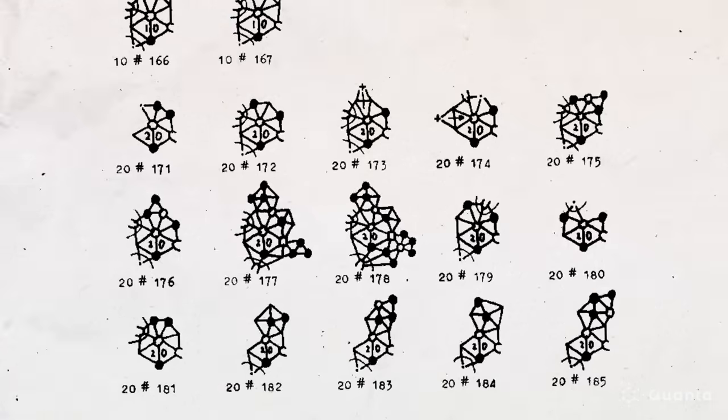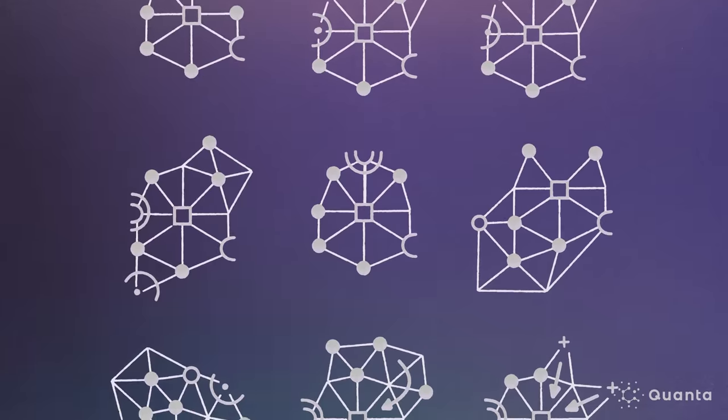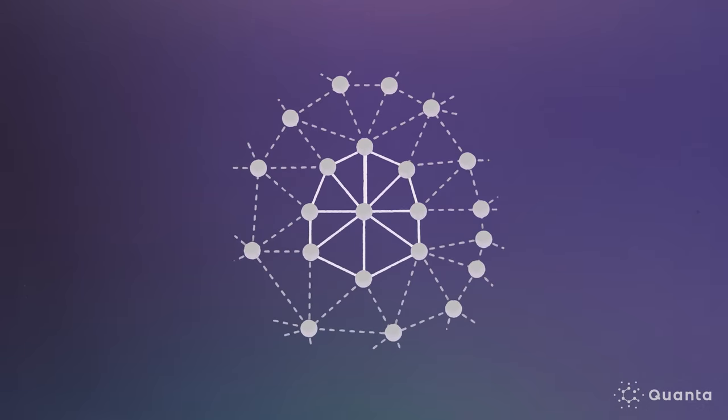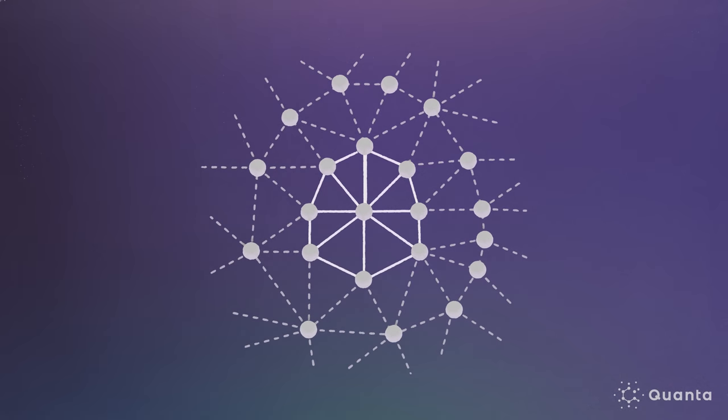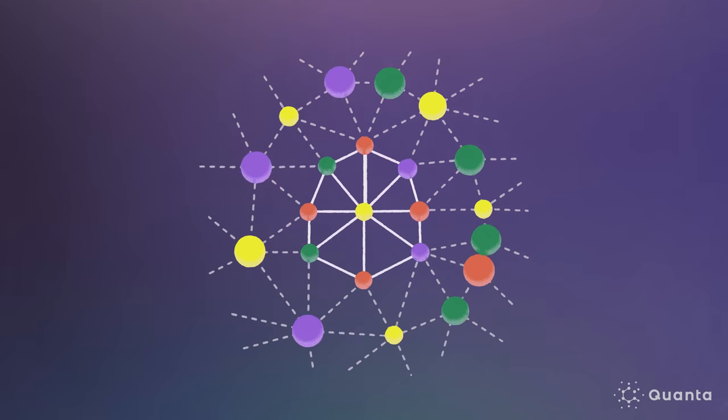The more they looked, the bigger and more complicated these sets became. The second task was to prove that these configurations were reducible, meaning that if a graph contained one of these configurations, then it could be colored with four or fewer colors. And proving that these configurations were reducible also was harder and harder.